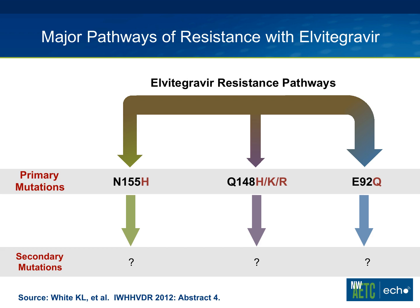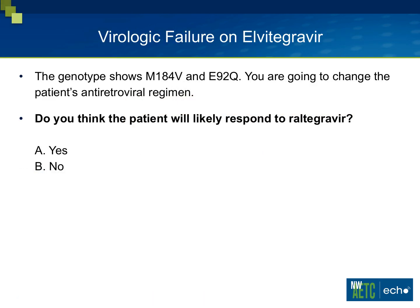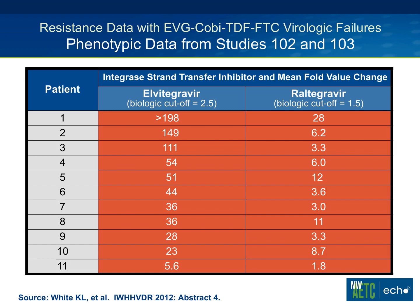If you had a genotype of M184V and E92Q and were going to change the regimen, do we think this patient would respond to raltegravir? The answer is no. Data from 11 patients shows phenotypically — red indicates resistance, fold change above 2.5 is resistant to elvitegravir, above 1.5 is resistant to raltegravir — every one of the patients who was resistant to elvitegravir was also resistant to raltegravir. Again, think of these drugs as having very high overlap and very high cross-resistance.